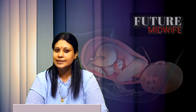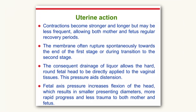When discussing the physiological changes in the second stage of labor, there are two factors: changes during uterine contraction and soft tissue displacement. The contractions become stronger and longer but may be less frequent, allowing both mother and fetus regular recovery periods. The membranes often rupture spontaneously, and the consequent drainage of liquor allows the hard round fetal head to be directly applied to the vaginal tissue. Fetal axis pressure increases flexion of the head, resulting in a smaller presenting diameter and more rapid progress.